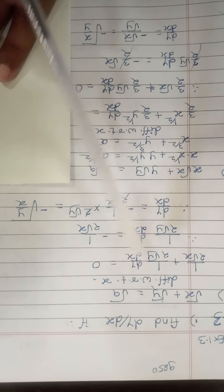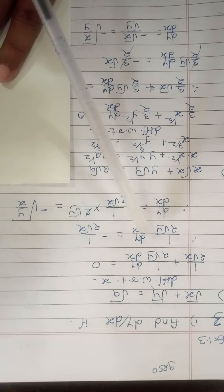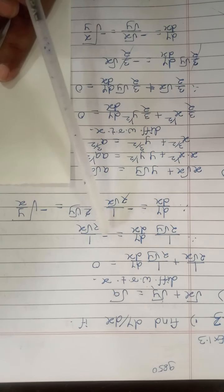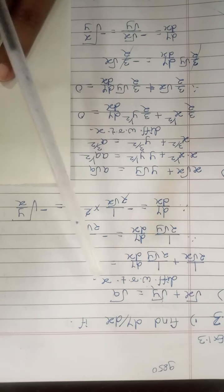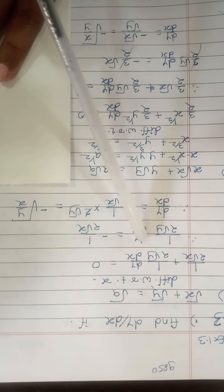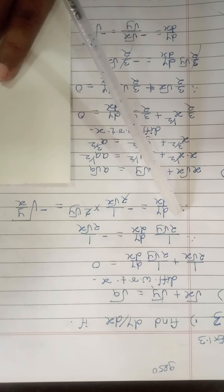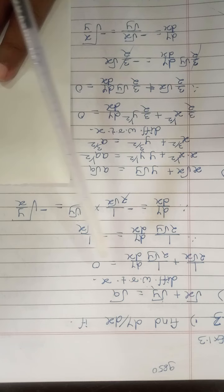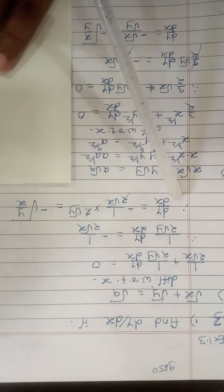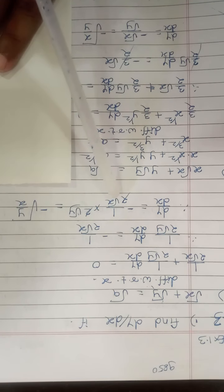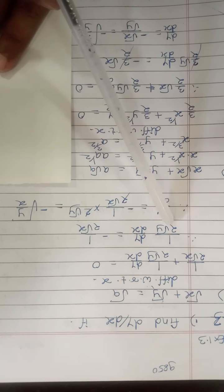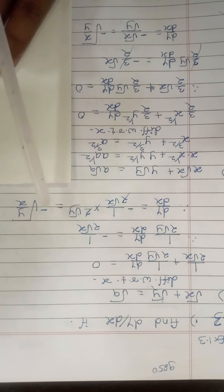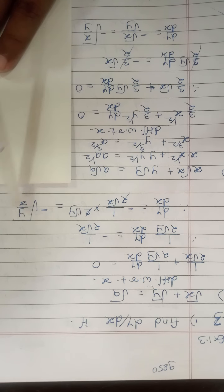We write the term as it is: 1/(2√y) · dy/dx. Moving the other term to the right side gives a minus sign. So dy/dx equals −(1/(2√x)) divided by (1/(2√y)). The 2s cancel, giving the final answer: dy/dx = −√y/x.